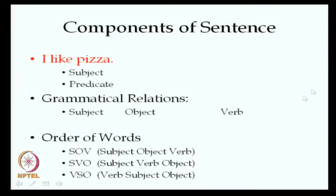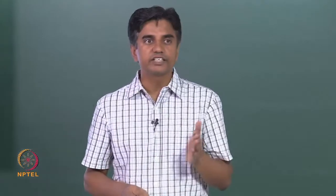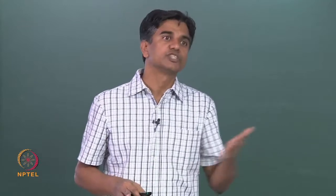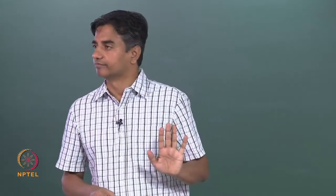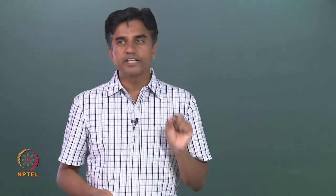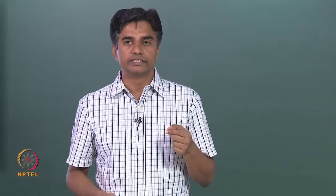The distinction between subject and predicate helps us understand that subject is an important component of a sentence, but it is not part of the predicate — everything besides the subject is part of the predicate. Subject, object, and verb are called grammatical relations in a sentence.